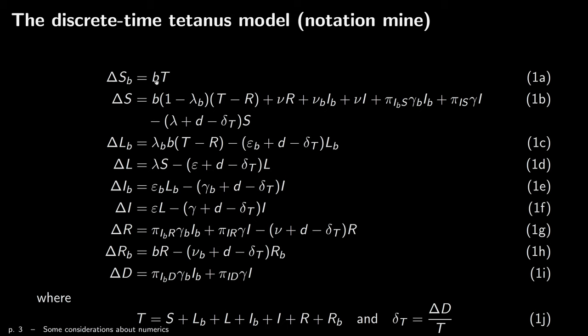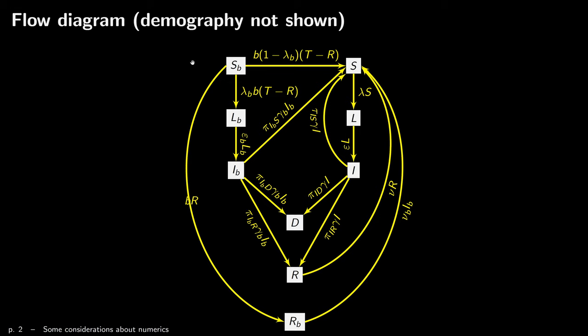This is the variation, so at the next time step, what will be in compartment SB is what is currently in SB plus this variation. SB at time t plus delta t will be the population in SB at the next time step. If I showed demography, there would be an arrow coming in here into SB representing this flow of newborns, but we're not showing it here.